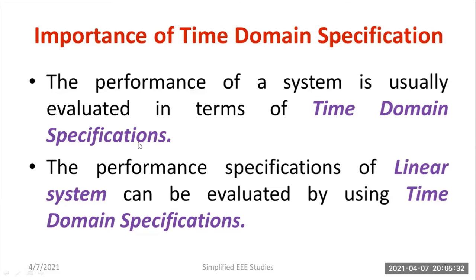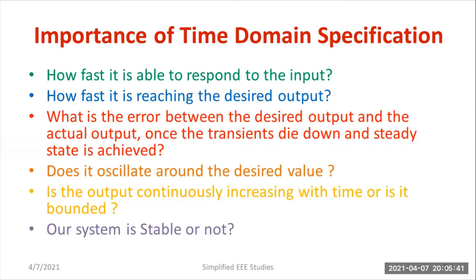Time domain specification is typically applicable for linear control systems. For performance analysis, we are mainly focusing on time domain specification. As you can observe, there are different questions: how fast is the system stable to respond to the input, how fast is it reaching the desired output, what is the error between the desired output and the actual output once the transients die down and the steady state is achieved, does it oscillate around the desired value, is the output continuously increasing with time or is it a BIBO system — bounded input, bounded output — and whether the system is stable or not.